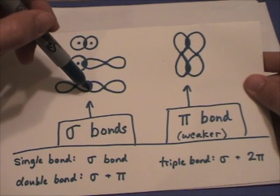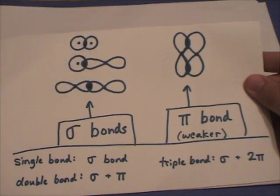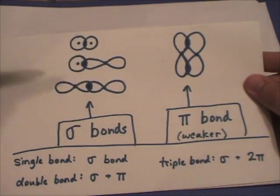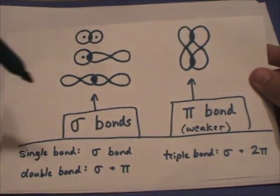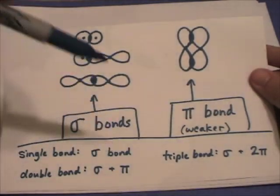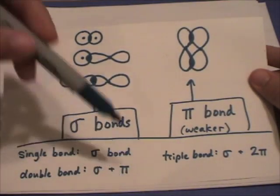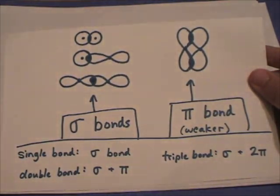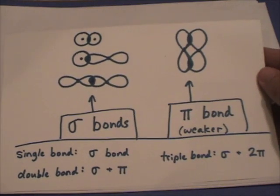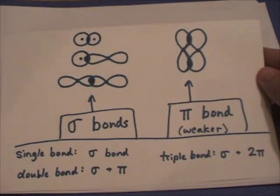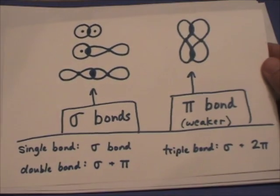A sigma bond occurs when the electron overlap is between the nuclei of the atoms. A single bond is a sigma bond. A double bond is a sigma bond and a pi bond. And a triple bond is a sigma bond and two different pi bonds.